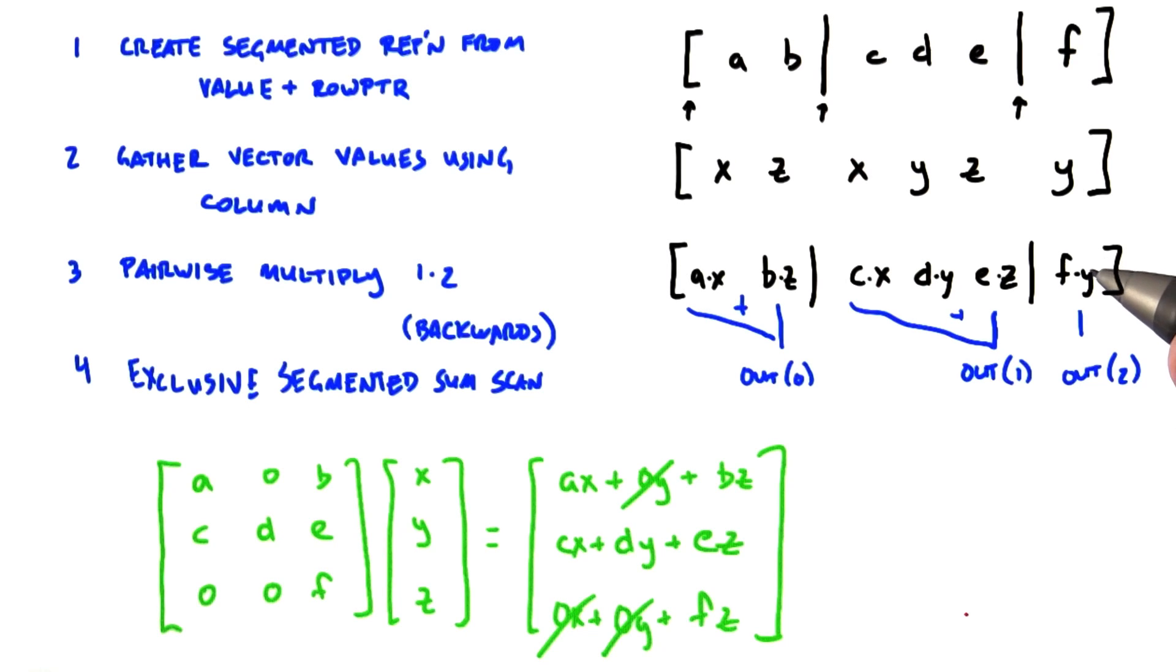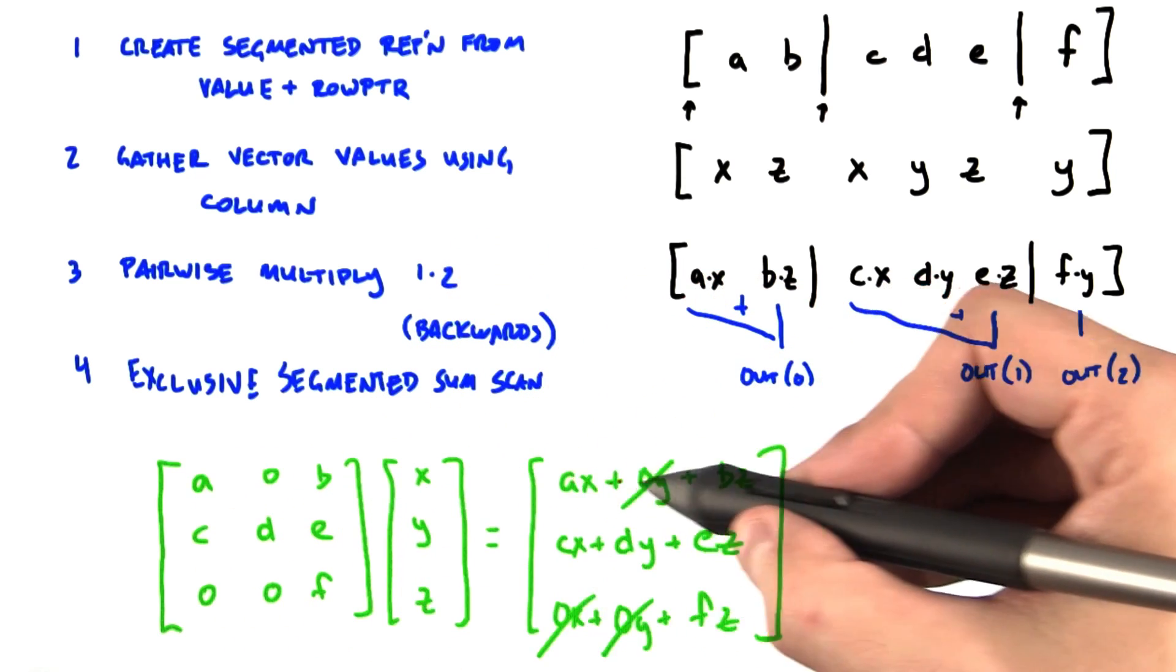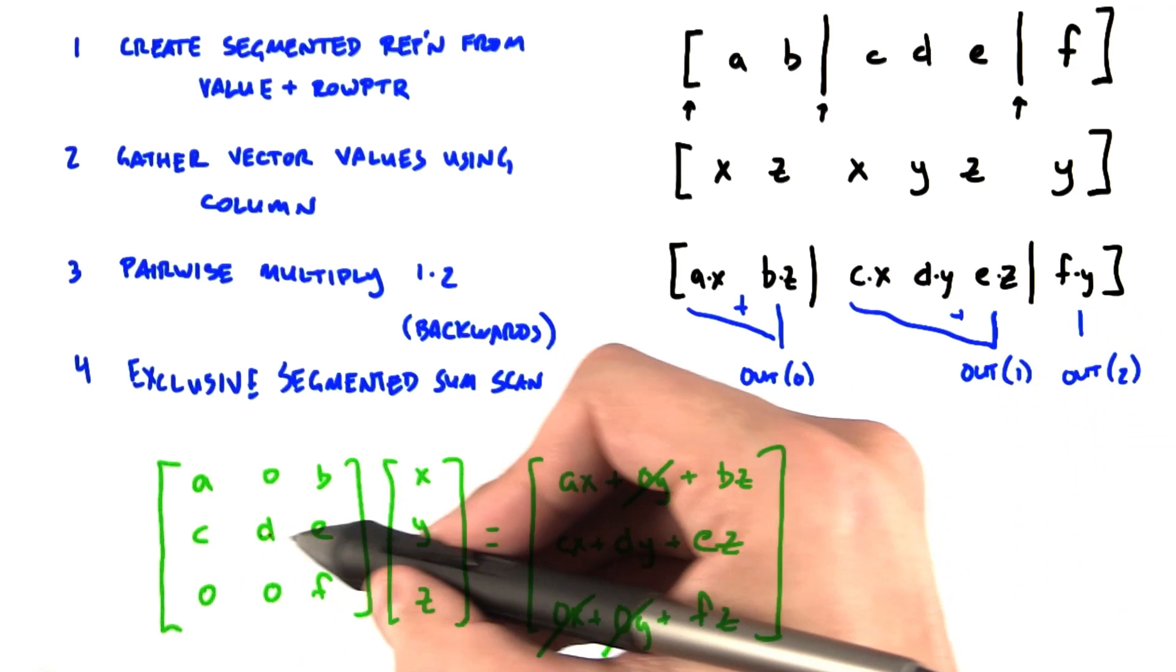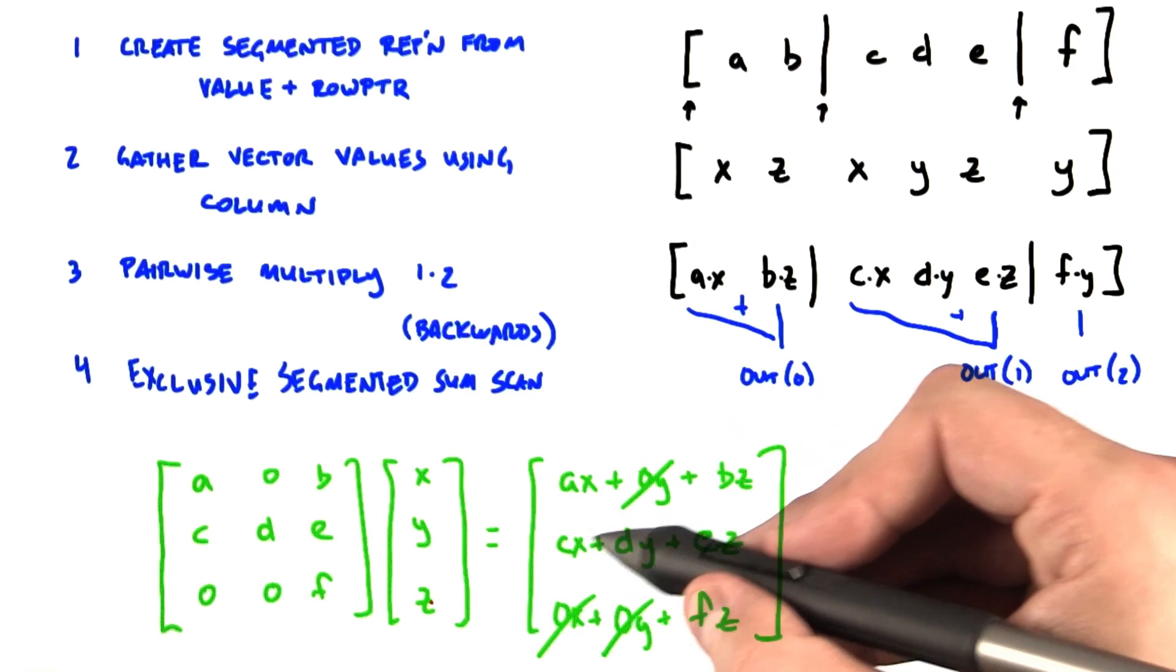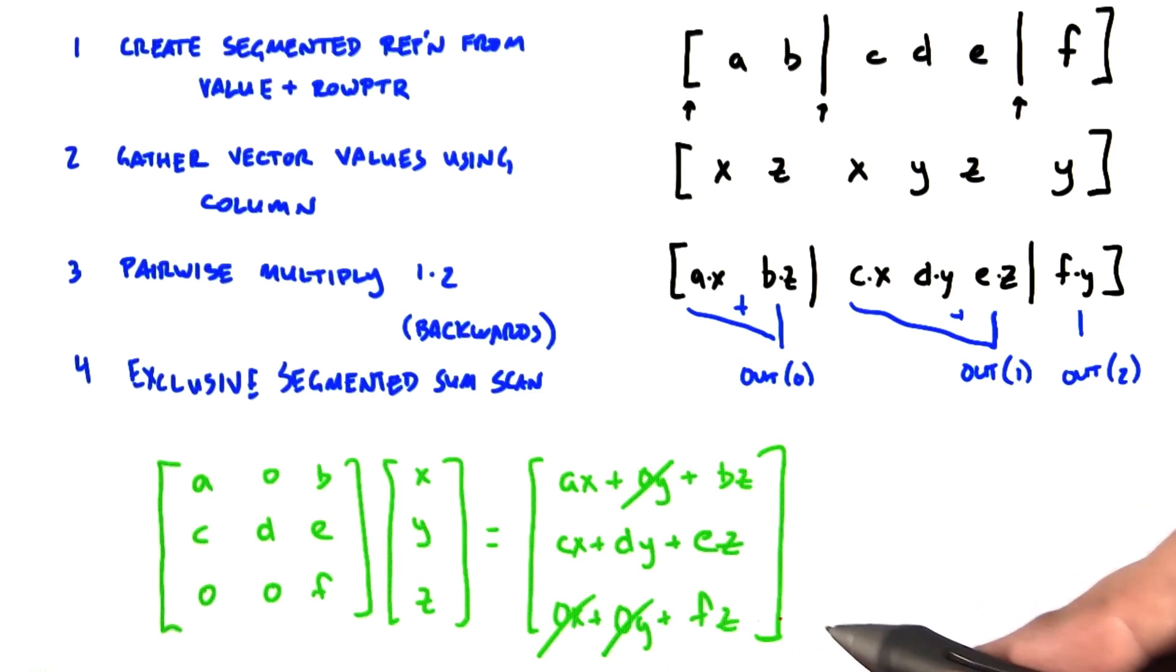Just to go back to our original matrix to make sure we're actually going to get the same answers. So here's our original matrix here and our original vector. And we note that we dot product this vector with this vector to get this answer. This vector dotted with this vector to get this answer. And then this vector dotted with this vector to get this answer.